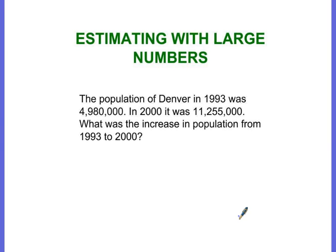Here's a word problem where we have to estimate using very large numbers. A lot of kids really have trouble with these and may miss them, so watch closely. The population of Denver in 1993 was 4,980,000. In 2000, it was 11,255,000. What was the increase in population from 1993 to 2000?